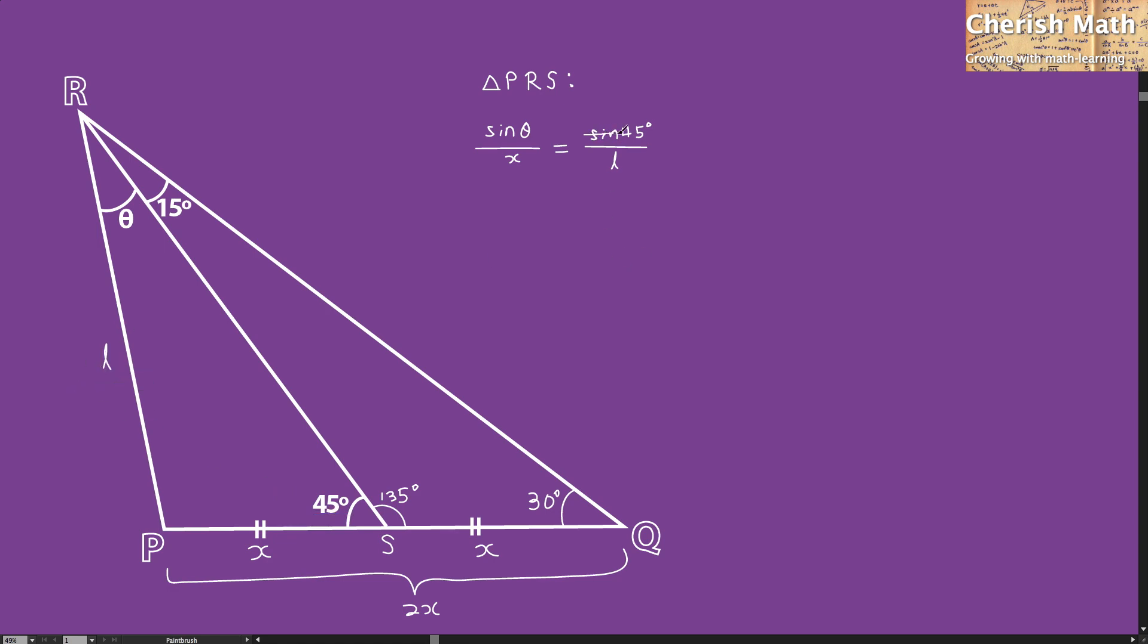Sine 45 degrees is equivalent to 1 over the square root of 2. I have to rearrange to make X the subject. That turns X equal to the square root of 2 times L sine theta. I'm going to name this as the first equation.